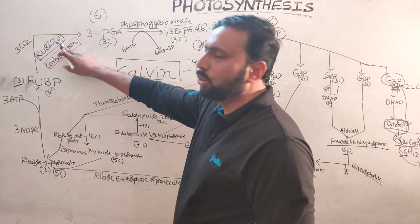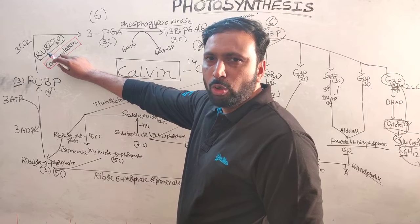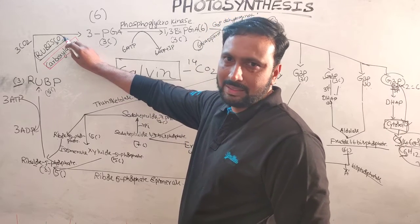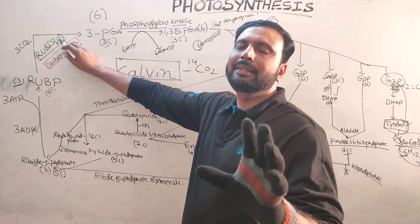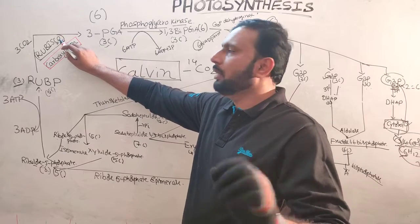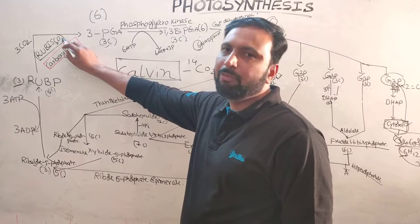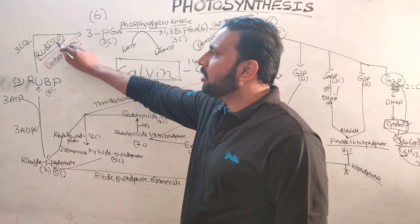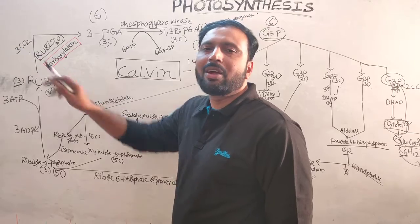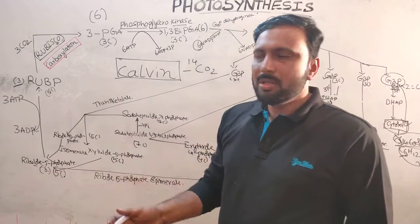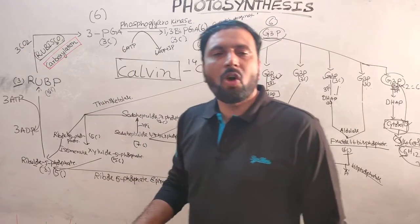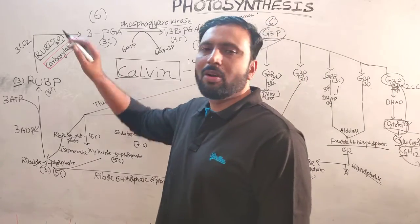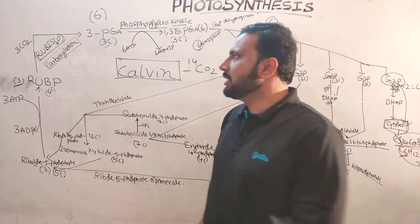The enzyme involved is RuBisCO — ribulose 1,5-bisphosphate carboxylase/oxygenase — the most abundant enzyme and protein present in leaf mesophyll cells. RuBisCO acts as a carboxylase when carbon dioxide concentration is higher. Sometimes RuBisCO acts as an oxygenase when oxygen concentration is higher; that process is called photorespiration.